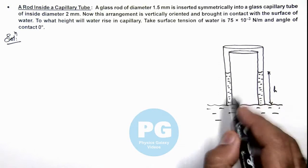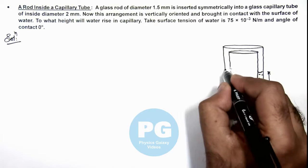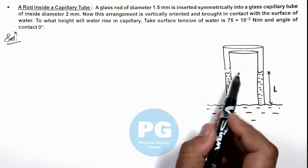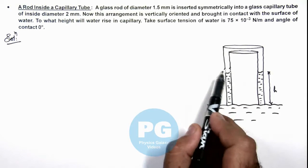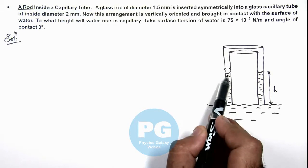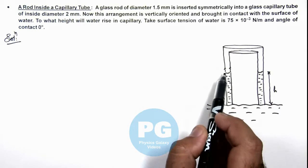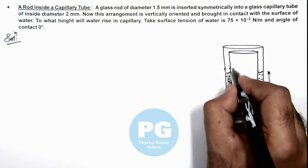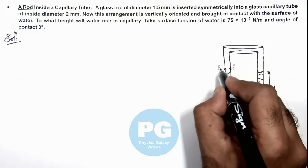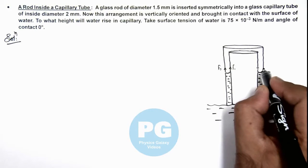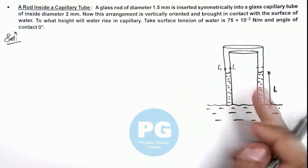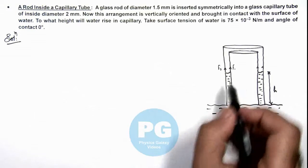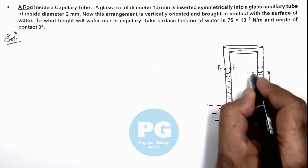Here we can calculate the force acting on the surface of glass rod as well as inner surface of capillary which is pulling the liquid up. So if this force is F₁ and this force is F₂, which will also be acting on the whole circumference, we will consider here.